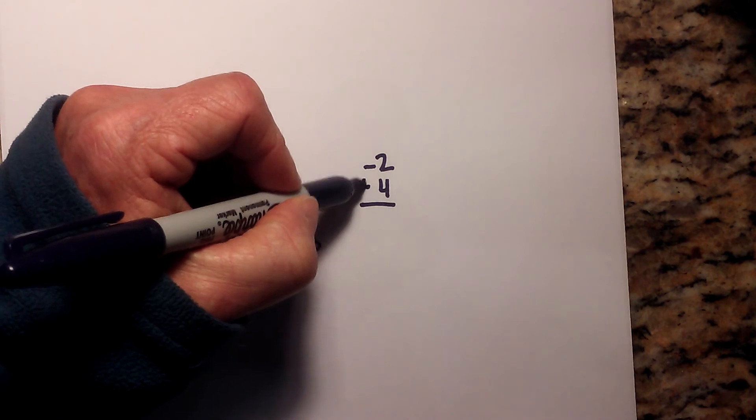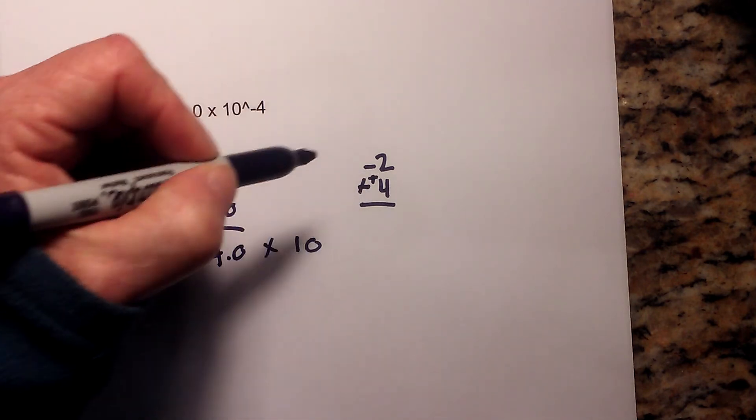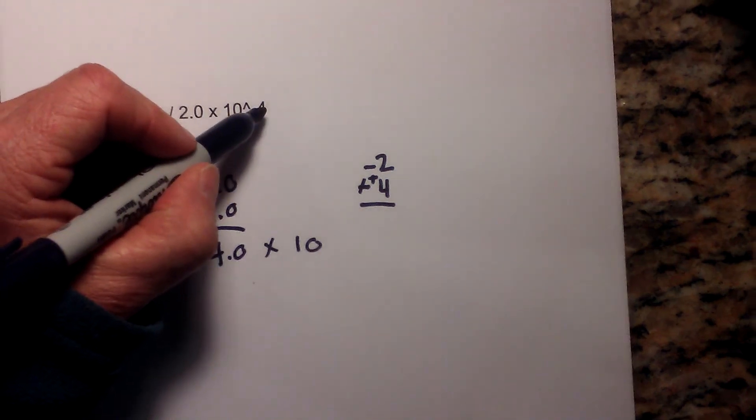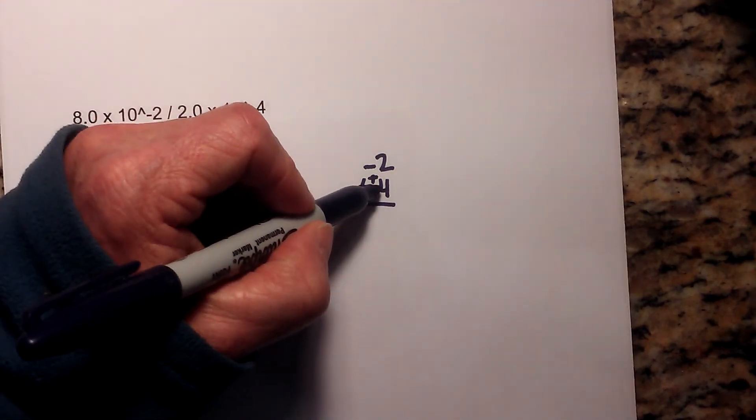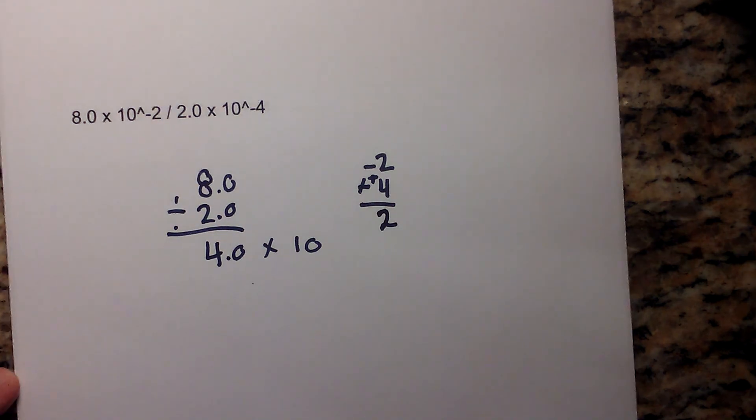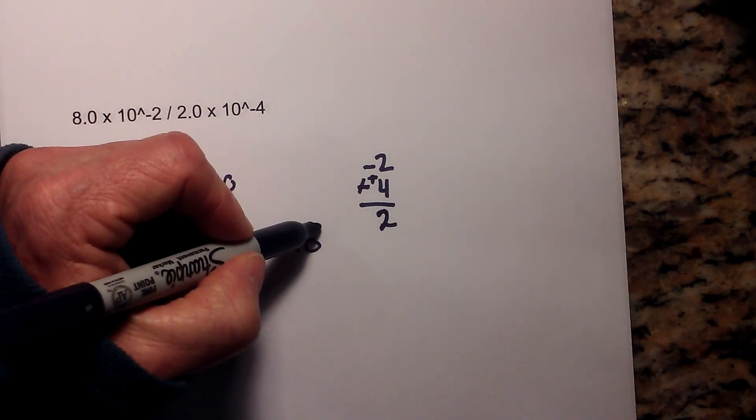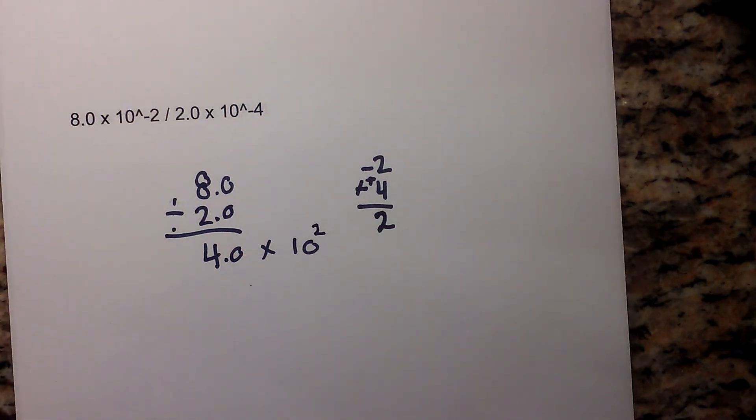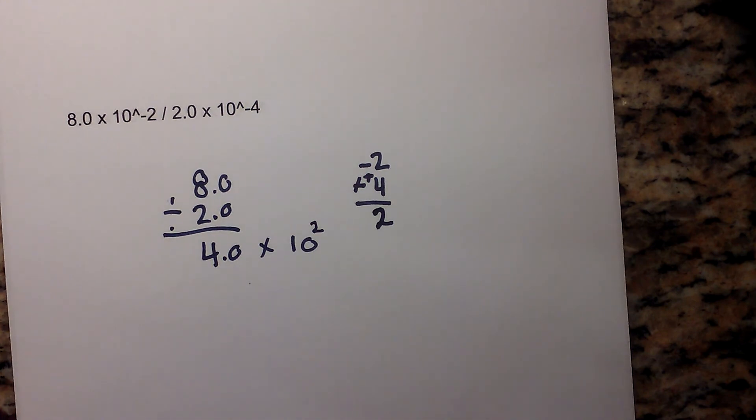This becomes a positive and this becomes a positive, so minus a negative is like plus a positive. So we have a positive 4, so the exponent will actually be a positive 2. That becomes 4.0 times 10 to the second.